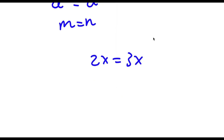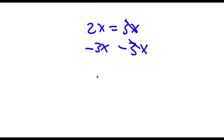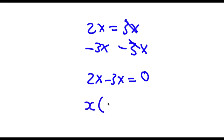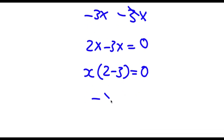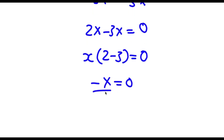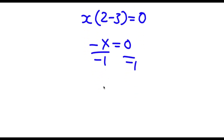To solve this, I'm first going to subtract 3x from both sides. These two cancel out and now I'm left with 2x minus 3x is equal to 0. If I factor out x I get x times 2 minus 3 is equal to 0. Now 2 minus 3 is negative 1, so I have negative x is equal to 0, and if I divide both sides by negative 1 I get x is equal to 0.